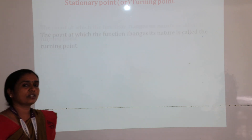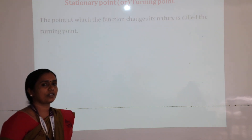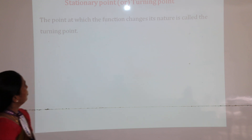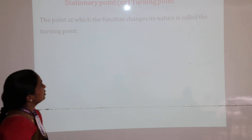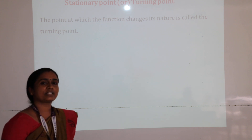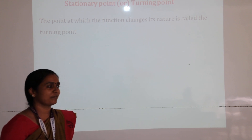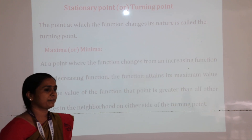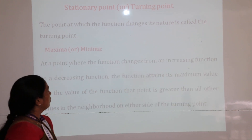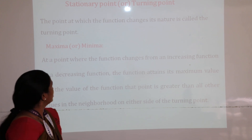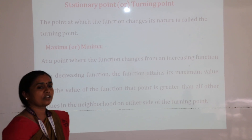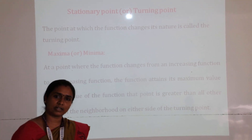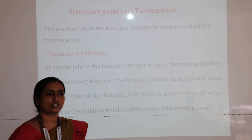First, we are going to see about the stationary point or tangent point. What is the meaning of a stationary point? The point at which the gradient changes in nature is called the stationary point or tangent point — for example, maxima and minima. The stationary point is where the function changes, and at that point the gradient value will become 0.